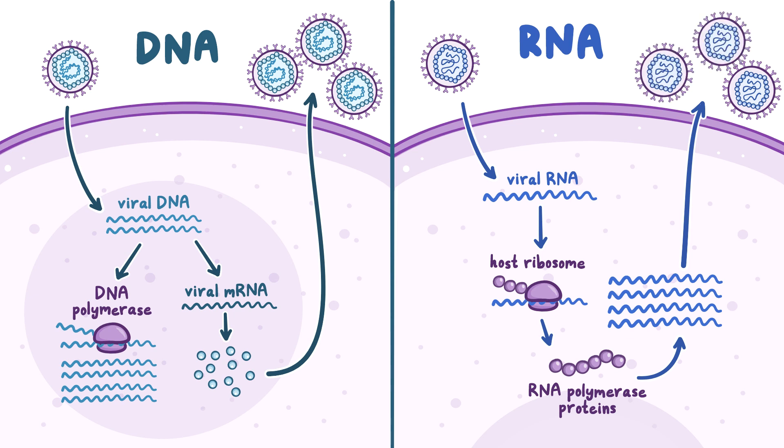RNA polymerases are more likely to make copying errors than DNA polymerases and therefore often make mistakes during transcription. This is why mutations in RNA viruses occur more frequently than in DNA viruses.